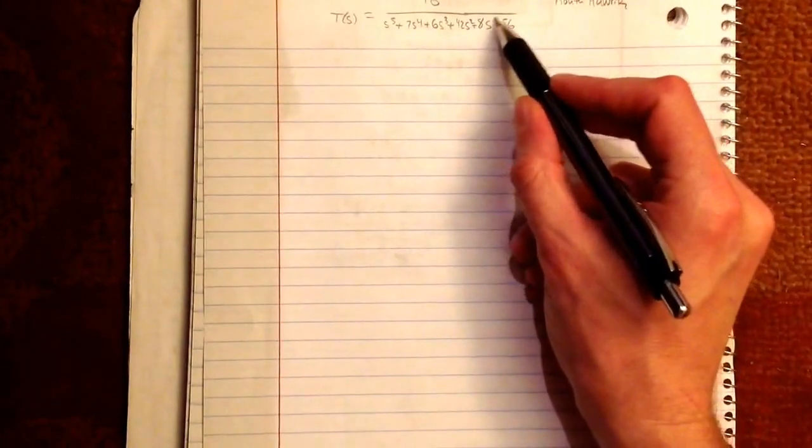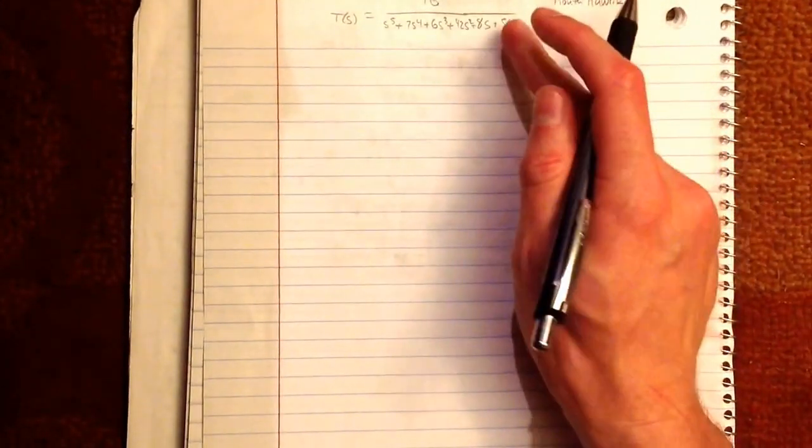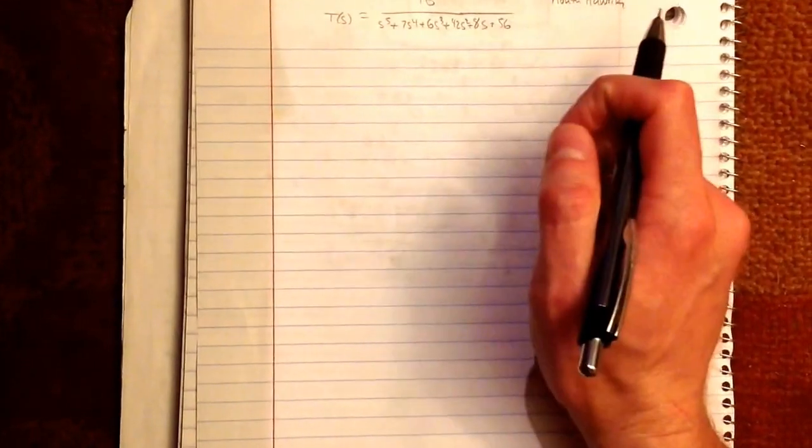Basically, you take a transfer function. We just got our transfer function here. Sometimes they will give it to you in a unity feedback. Then you have to do the feedback loop. As a good litmus test to see if you have to do that, look for the constant here. If you don't have a constant, you probably have a feedback loop. Just look for the problem statement saying unity feedback loop or some other feedback loop.